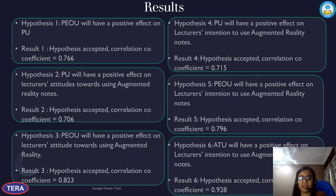These are the results for each of the six hypotheses. For all six hypotheses, the hypothesis is accepted and the supporting analysis data has been provided.